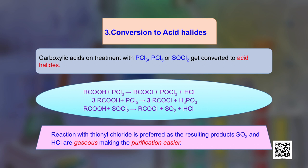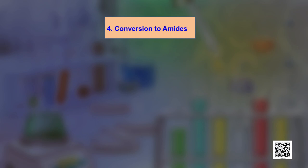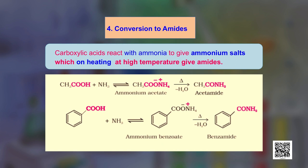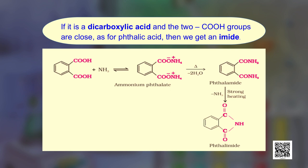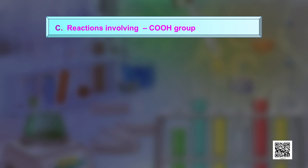The fourth reaction of this category is conversion to amides. Carboxylic acids react with ammonia to give ammonium salts first, which on heating at high temperature give the corresponding amide. If we start with a dicarboxylic acid where the two -COOH groups are very close to each other, as in phthalic acid, we ultimately obtain an imide after first forming the ammonium salt.